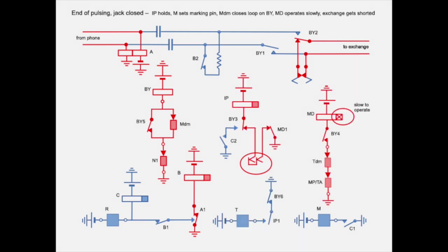Relay IP operates when the jack plug is replaced. A circuit is now provided for relay MD through BY4, the interrupt contact TDM of the transmit magnet T, and the metallic contact between the tripping arm TA and the marking pin MP. Relay MD operates slowly. This keeps contact MD1 closed for a short moment. Relay IP releases slowly on MD1 opening. Contact IP1 then closes and energizes magnet T.